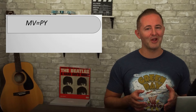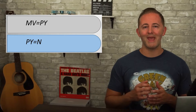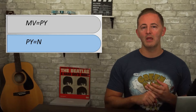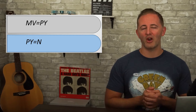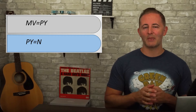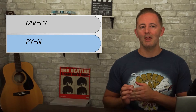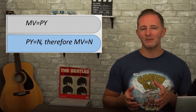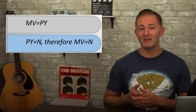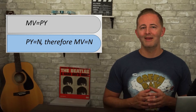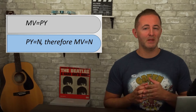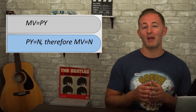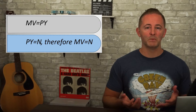To help understand this, recall another equation: P times Y equals N, where N is nominal GDP. In other words, the price level times real output gives us nominal GDP. Once we realize that the right side of our equation equals nominal GDP, it means the left side, M times V, also equals nominal GDP. So the money supply times the number of times the average dollar bill is spent equals nominal GDP — and this makes sense because nominal GDP is just a fancy way of saying total spending.